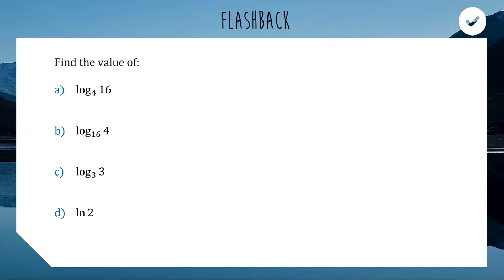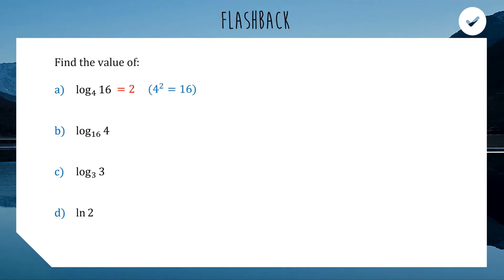Let's run through them. For the first one, log base 4 of 16 — this question is essentially asking us: 4 to the power of what gets us an answer of 16? The answer is 2, because 4 to the power of 2 is equal to 16. We're using that same cyclical method from last video. Question b is a bit trickier — it's asking us: 16 to the power of what gets you an answer of 4? The answer is a half, because 4 is the square root of 16.